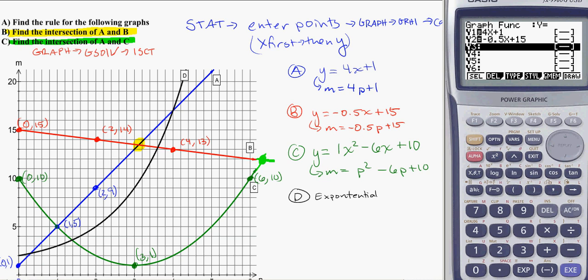Exit back. I'm going to leave the 4X plus 1, because that's equation A, but I'll replace this one with equation C. So I have X squared minus 6X plus 10. Draw it up.